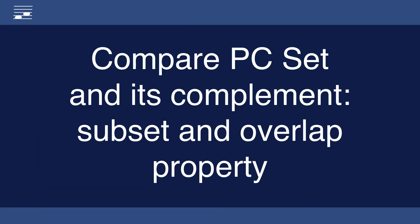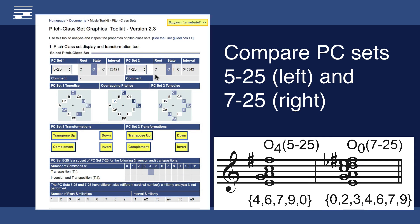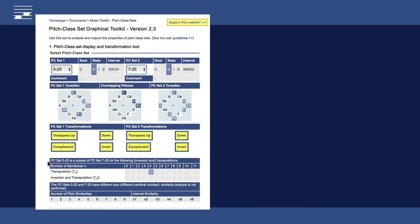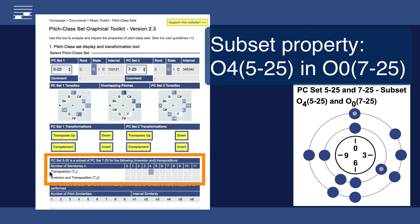Finally let's have a look at properties of a pitch class set and its complement. The original set 5-25 is loaded in the left inspector. The complement set 7-25 in the right inspector. The smaller set is predicted to be a subset when transposed by four semitones.